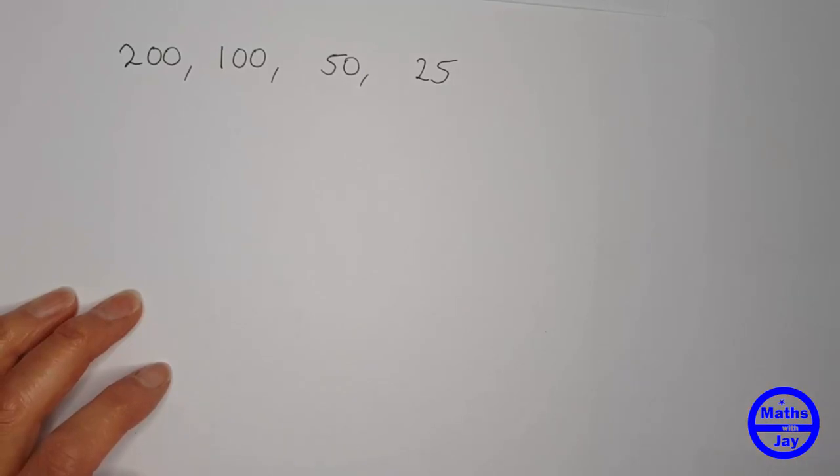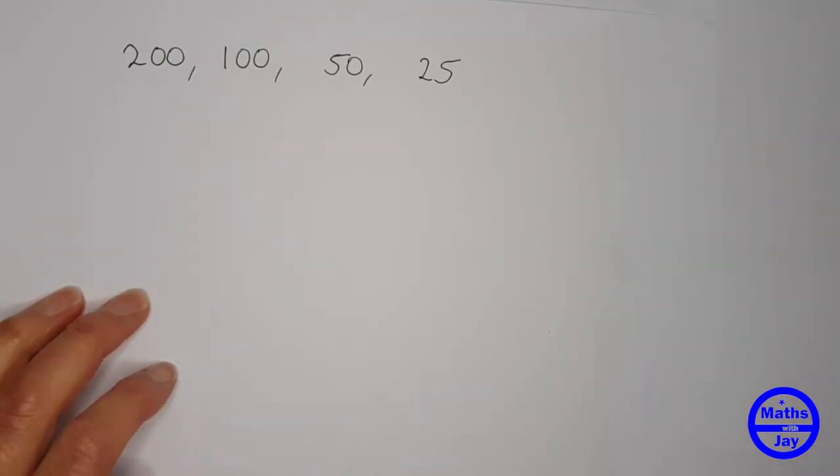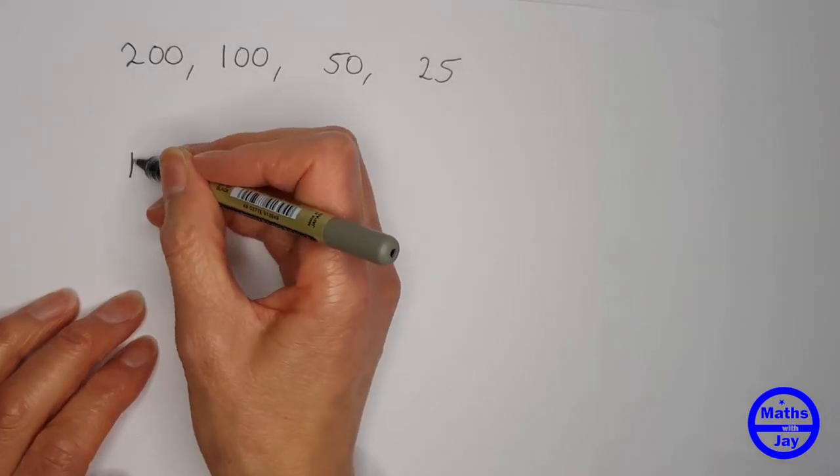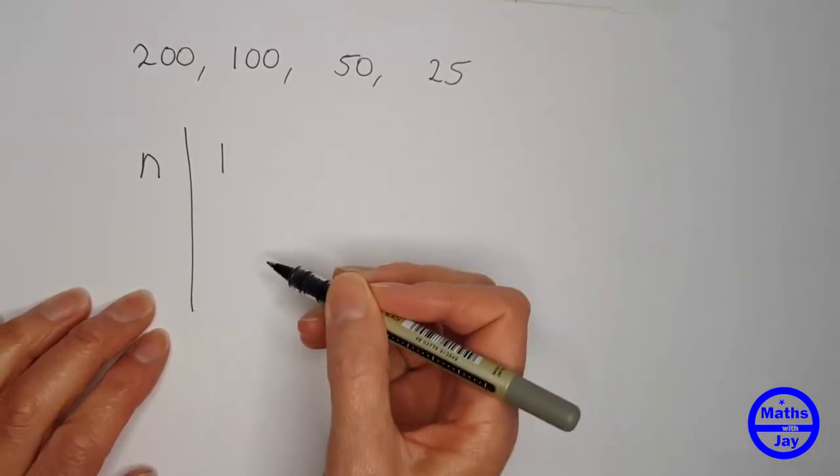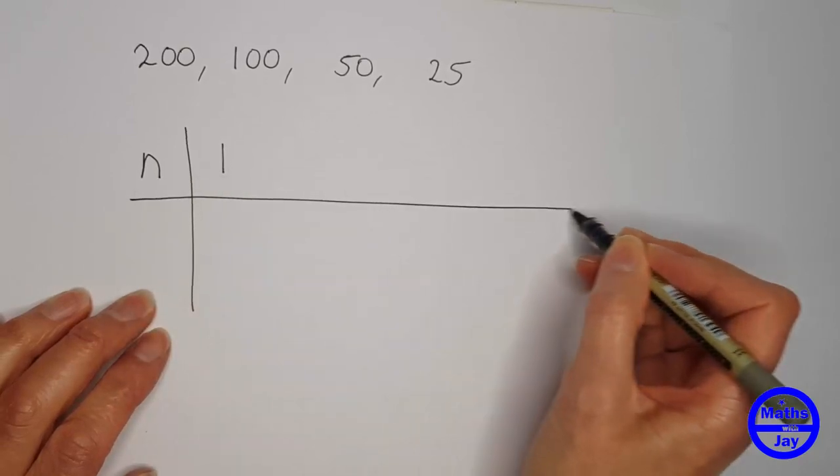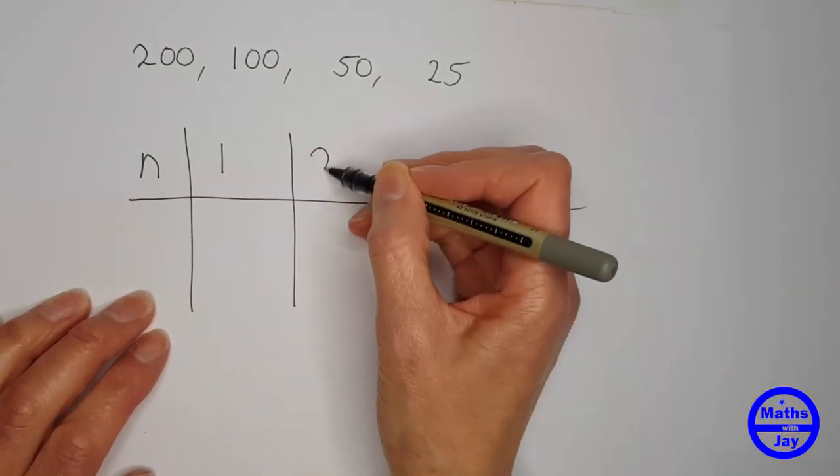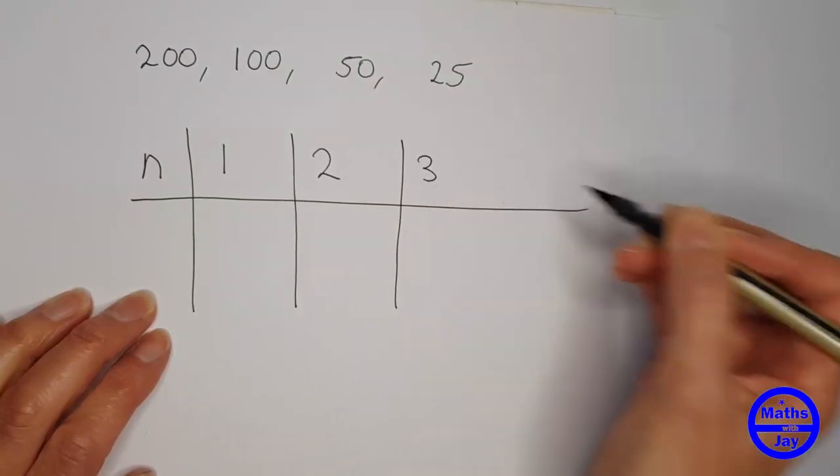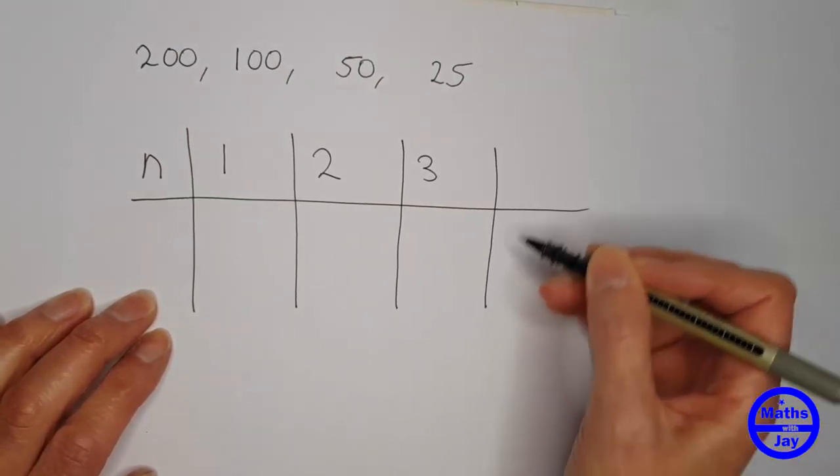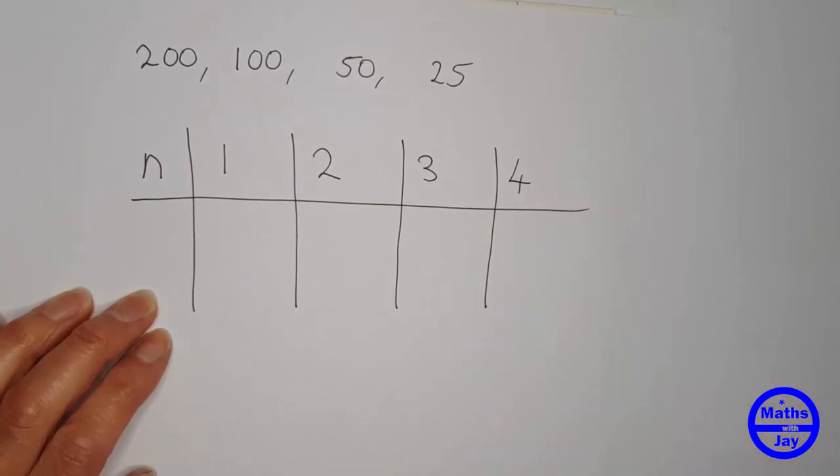So we'll start off by writing the n numbers in the table. So the first number means that n is 1, the second number means n is 2, third number n is 3 and the fourth number n is 4.